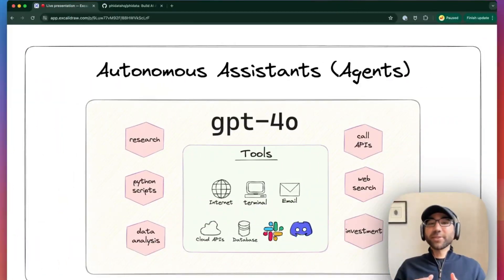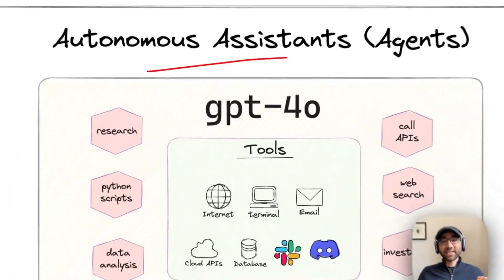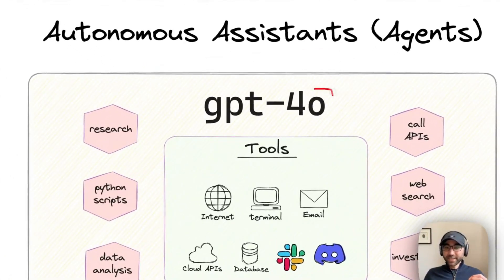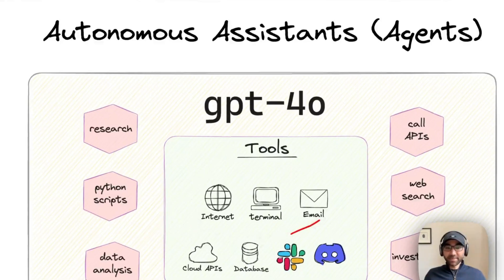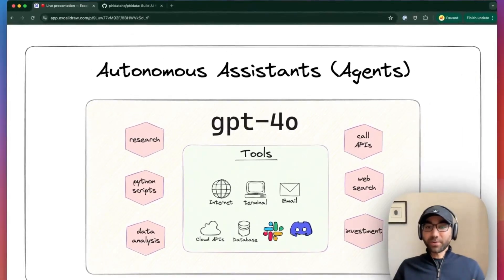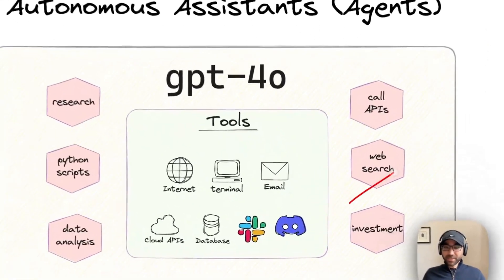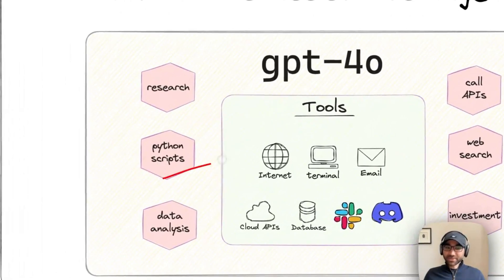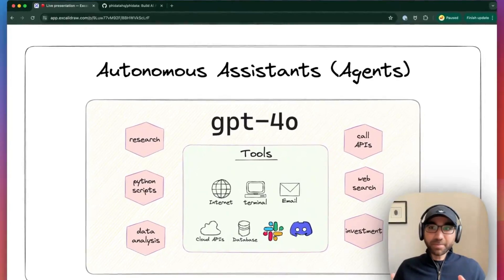Hey everyone, it's Sashpreet, and today let's build autonomous assistants, aka agents, from scratch. We'll take GPT-4O and give it a bunch of tools, like searching the internet, sending an email, querying cloud APIs — enabling it to take a problem and solve it for us. We'll make it do web search, write Python scripts, do data analysis, and a lot more. I want to walk through this process step by step, so let's get started.